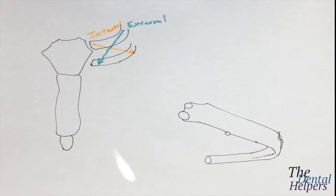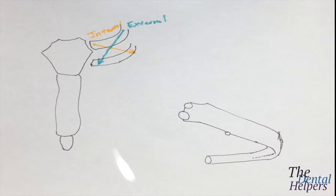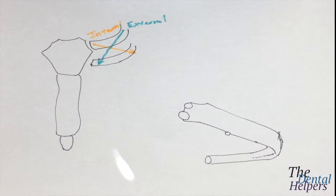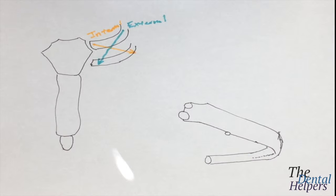The diaphragm is this dome-shaped muscle that separates the abdominal cavity from the thoracic cavity. It is pierced by the aorta, the esophagus, and the inferior vena cava.